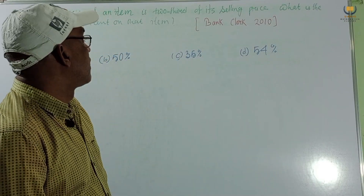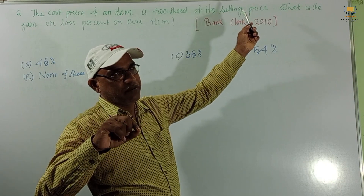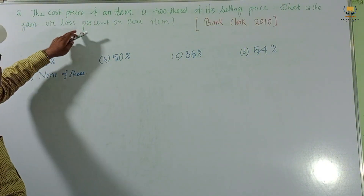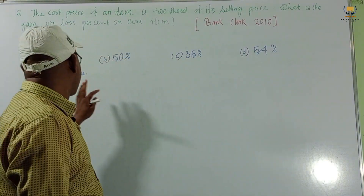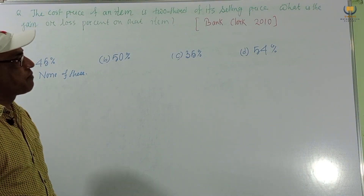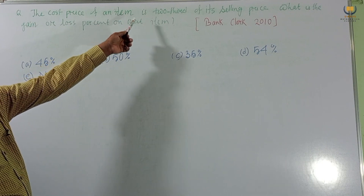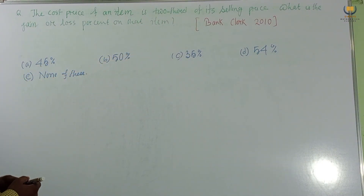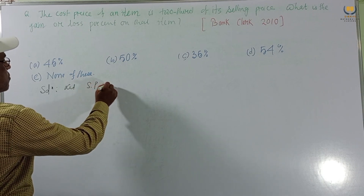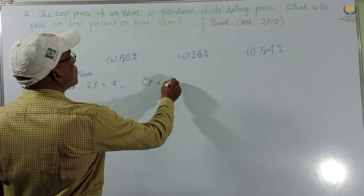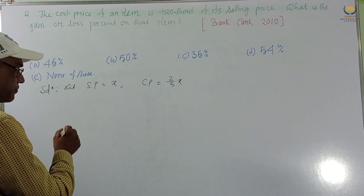Another type of problem: The cost price of an item is two-thirds of its selling price. The selling price is not given. What is the gain or loss percent on that item? Options: A) 45%, B) 50%, C) 35%, D) 54%, E) None of these. This was from Bank Clerk 2010. Let SP = x, then CP = (2/3) × SP = (2/3)x.